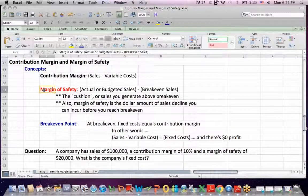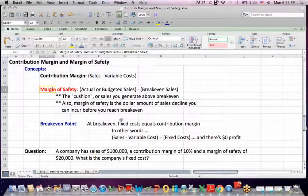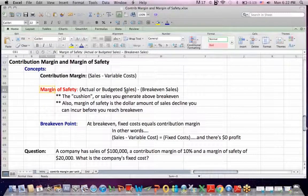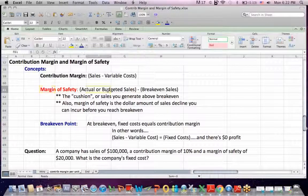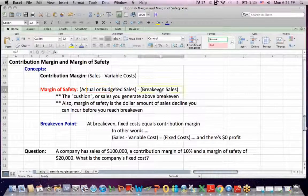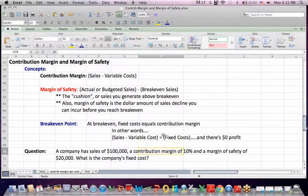So think of margin of safety as your cushion. If I break even at 1,000 units, and I have an actual level of sales of 1,500, I've got a margin of safety of 1,500 actual less break even of 1,000, which would be 500 units break even.